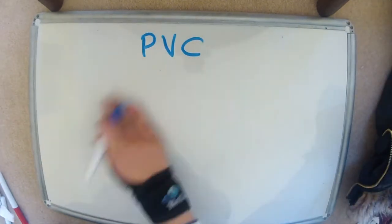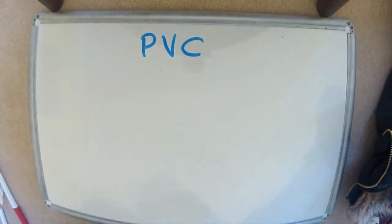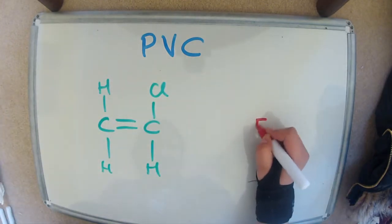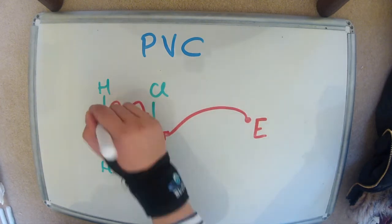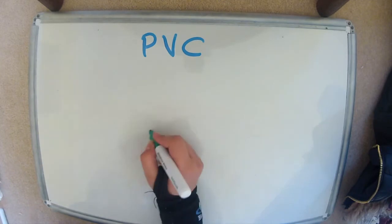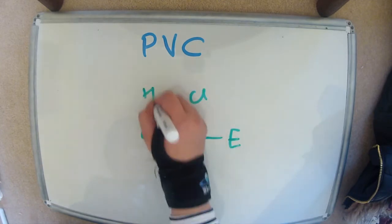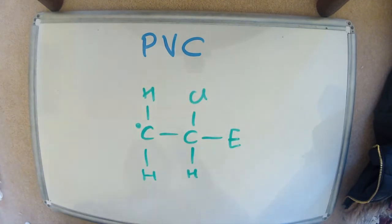So PVC is an addition polymer. And I'm going to quickly show you how it's done by free radical. So E is just any random radical. The dot means it's a radical. And it splits up the double bond, one electron from each side of the double bond goes across, and you form this radical.